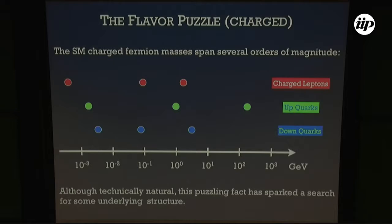Another interesting fact is that for the charged leptons and for the up quarks, the hierarchy between the heavier particles is a little less than the hierarchy among the lighter ones. For the down quarks it's the opposite, though it's a small effect.